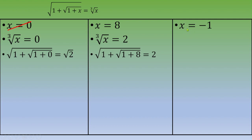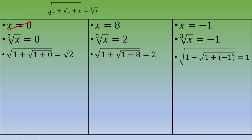Last case: x equals negative 1. The cubic root of negative 1 is negative 1. Plugging in: square root of (1 plus square root of (1 plus (negative 1))) equals square root of (1 plus square root of 0) equals square root of 1 equals 1. Since negative 1 is different from 1, we discard this solution. Therefore, the only valid value is x equals 8. Thanks for watching!